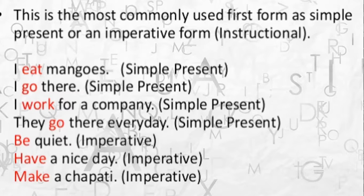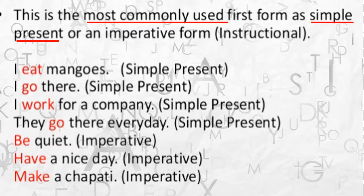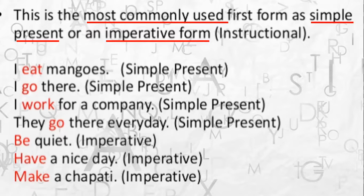The base form is the first form of the verb and is most commonly used either in the simple present tense — when you want to talk about something happening now — or in the imperative form. When we learned types of sentences, we learned imperative sentences, which are used when you are giving an order or instruction to someone. So the base form appears in simple present tense or in an instructional, imperative form.